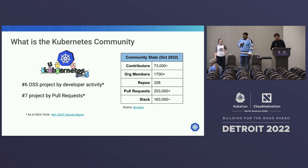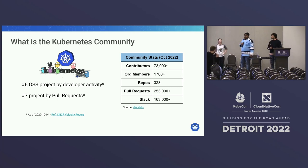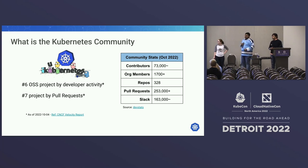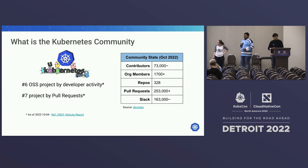Let's talk about how big the Kubernetes community is, or who constitutes the Kubernetes community. One of the figures I want to highlight is the number of contributors — we have almost 73,000 contributors, and it's growing year on year. In the last one year, we've had 10,000 new contributors. These are unique contributors who have ever touched the code base. We are the number six OSS project by developer activity, based on numbers published until the start of this month.